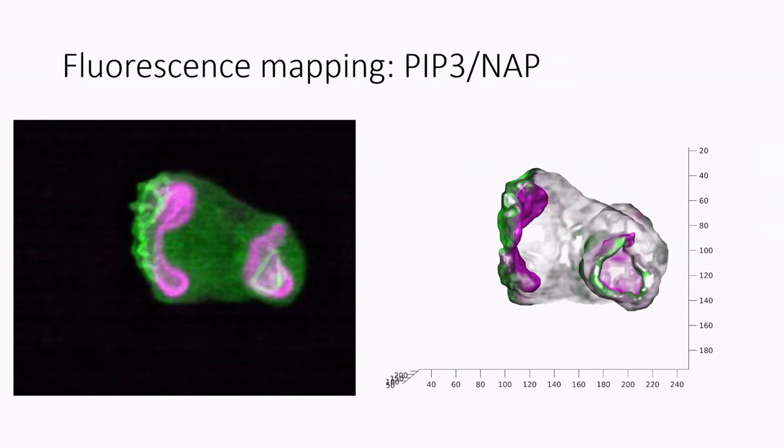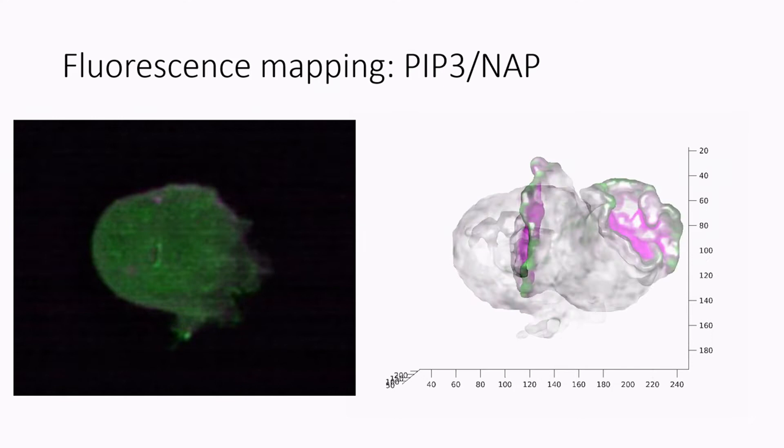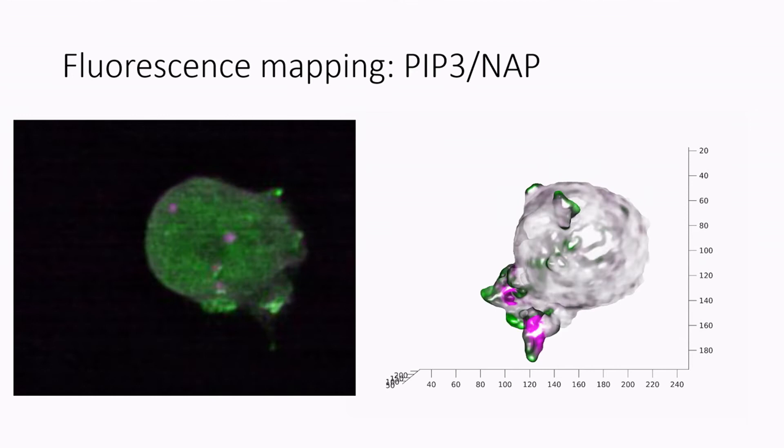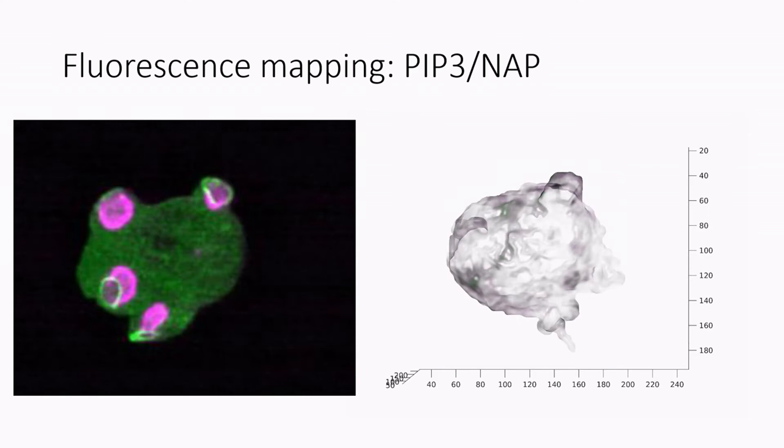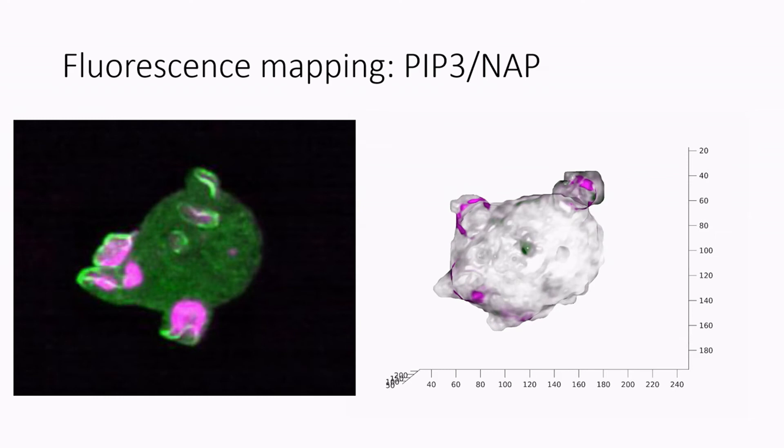We can also work on other markers. As I say, it doesn't really matter which sort of things we segment, and here we're looking at PIP3 and Nap. Nap is a marker basically associated with actin polymerization, and this is important biologically because what we see is this Nap is at the edge of the PIP3 patches, so we are looking at polymerization force at that edge. And this is what you see in the movies, and we wanted to show this sort of thing using the surface methods.